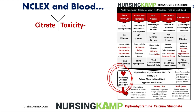Treatment summary for transfusion reactions: stop blood, flush with normal saline, keep vein open (KVO), assess ABCs and level of consciousness, notify the doctor. Return blood to the blood bank for hemolytic or allergic reactions. Only do blood cultures for bacteremia/febrile reactions. Give oxygen especially for hemolytic reactions. For autologous blood reactions, the most likely cause is bacteremia — contamination somewhere in the process.